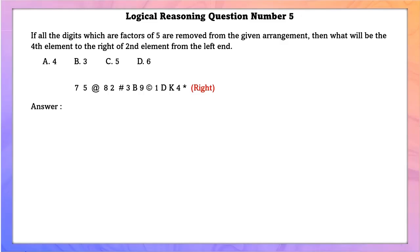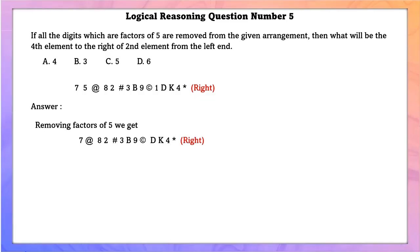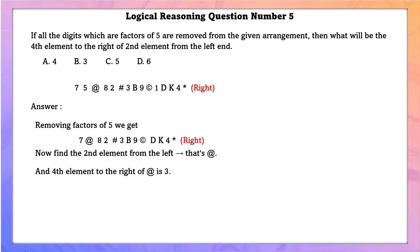Logical reasoning question number 5. If all the digits which are factors of 5 are removed from the given arrangement, then what will be the 4th element to the right of the 2nd element from the left end? After removing factors of 5, the 2nd element from the left is the @ symbol, and the 4th element to the right of the @ symbol is 3.